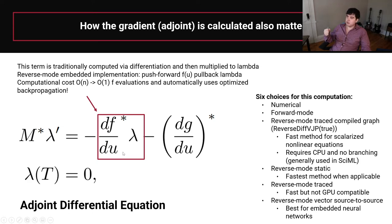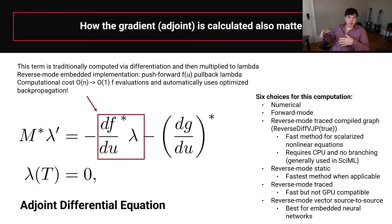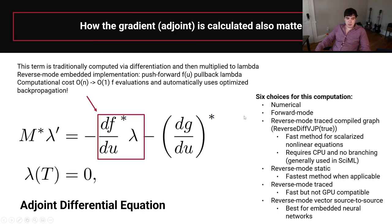Using reverse mode AD for the Jacobian-vector product reduces the cost from O(N) to O(1), where N is the number of columns in the Jacobian. This is a significant performance trick. Some software supports this AD integration and some does not — this is where you see orders of magnitude performance differences. The adjoint equation is truly the continuous-time version of backpropagation through time.